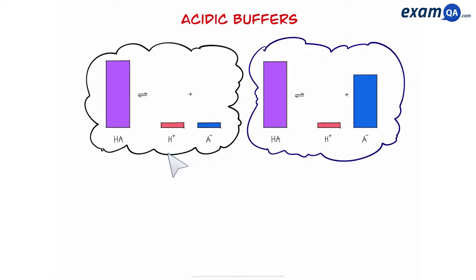So on the left we have a normal weak acid. On the right we have an acidic buffer. When you have a normal weak acid alone we know that the concentration of H+ and A- are the same.